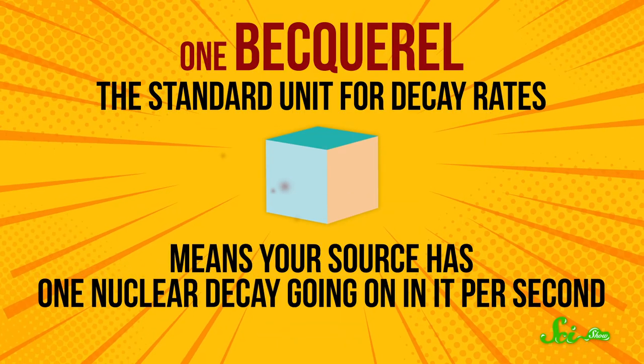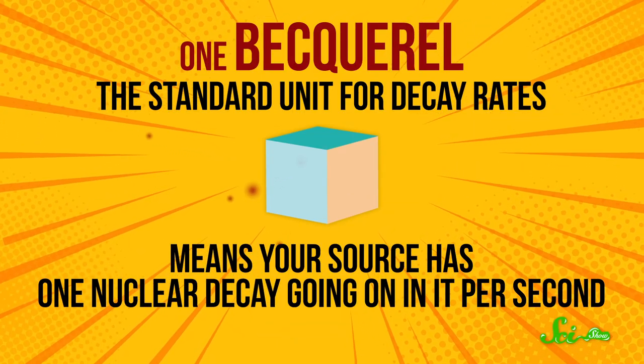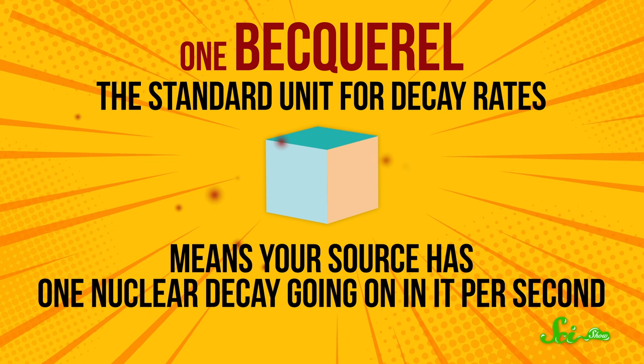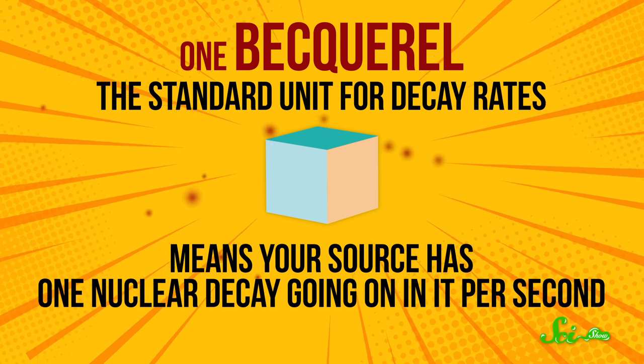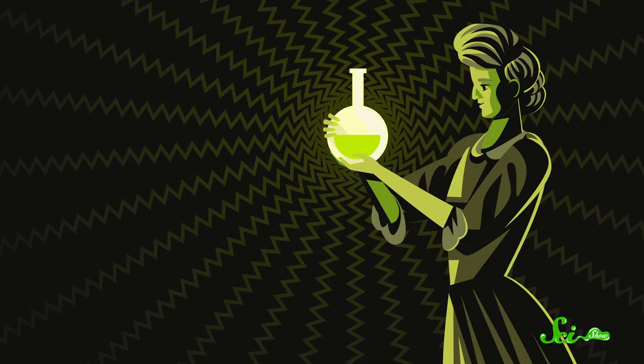One becquerel, the standard unit for decay rates, means your source has one nuclear decay going on in it per second — basically a tiny amount of activity. Your body typically, and safely, emits several thousand becquerels all the time.